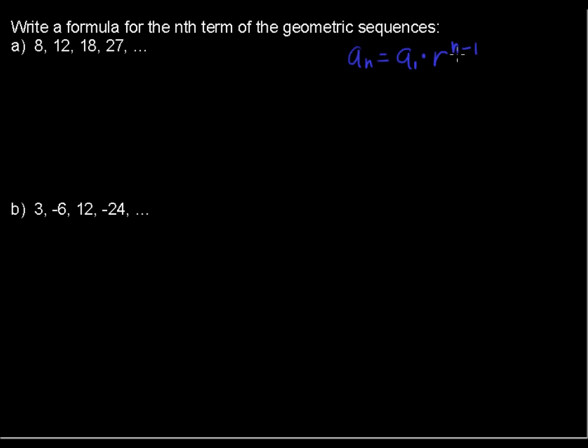The reason it's n minus 1 we'll talk about in just a little bit. But first of all, let's find what r is. The ratio in general is the ratio of a of n plus 1, or that is one of the terms, divided by the term immediately before it.